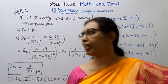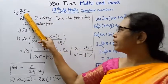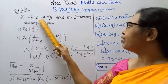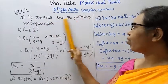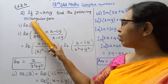Hello students, welcome to Maths and Tamil channel. 12th class maths, complex numbers, exercise 2.4. If Z equals x plus iy, find the following in rectangular form. First, find the real part of one by Z.